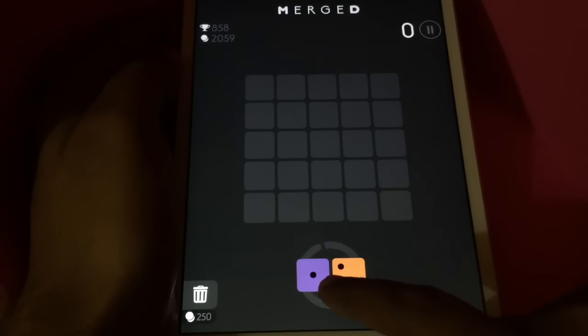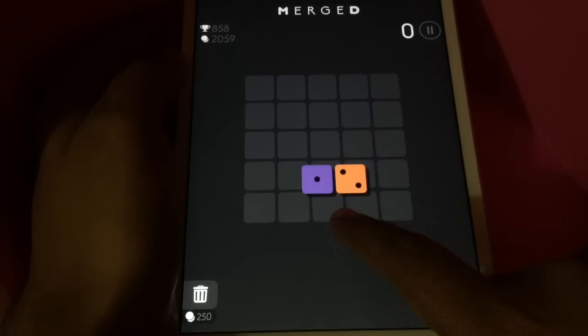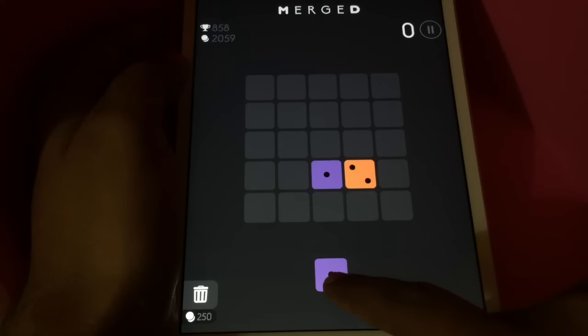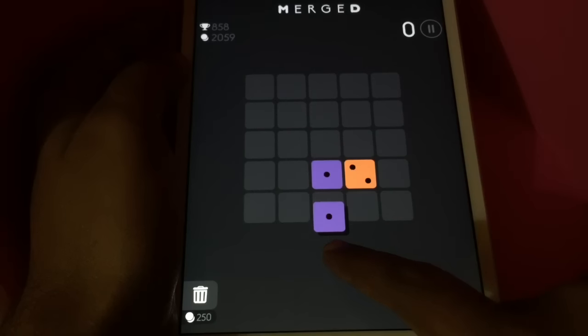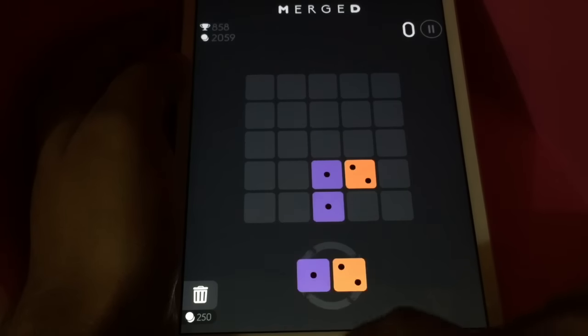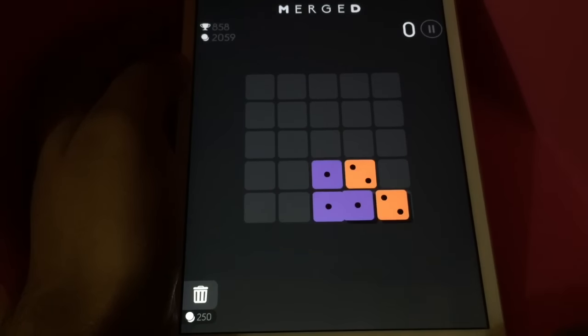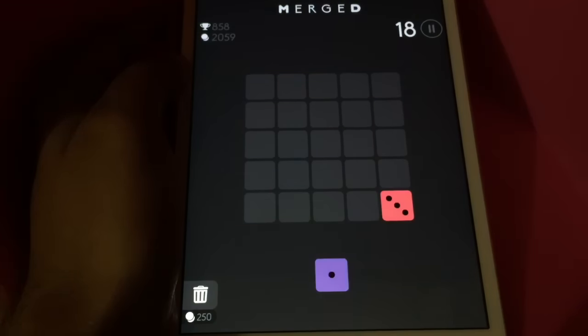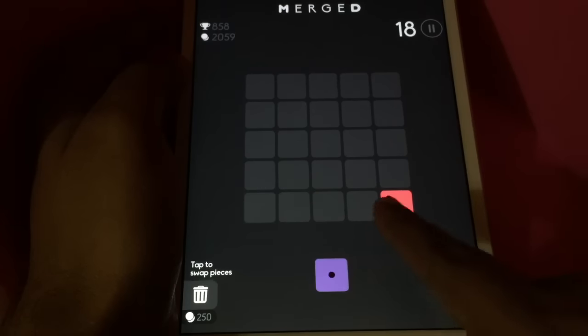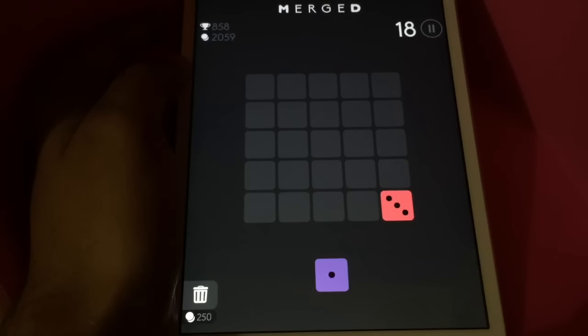You place it anywhere on the board. You have to align three colors together, and it changes color whenever three of them are touching each other. It transforms into a new color.